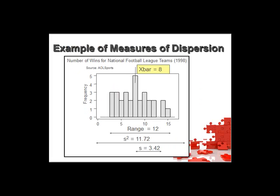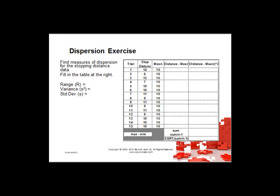Here are those examples of measures of dispersion again — range, sample variance and standard deviation. Here is a dispersion exercise: find the measures of dispersion for the stopping distances. Fill in the table on the right — either draw this out or print it off from the student centre. Use the slide and the table on the right to calculate the range, the variance and the standard deviation.